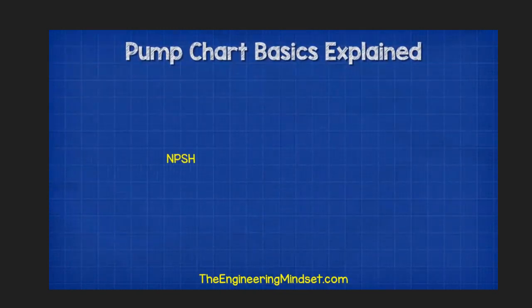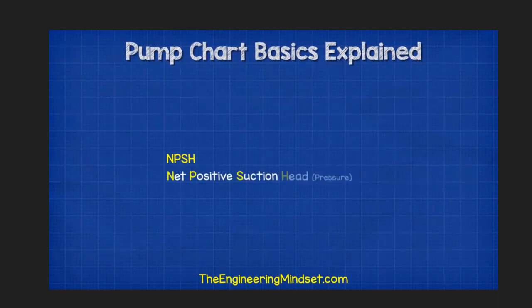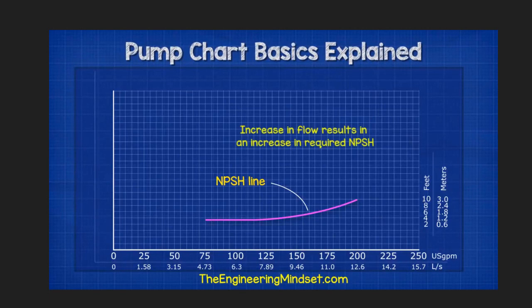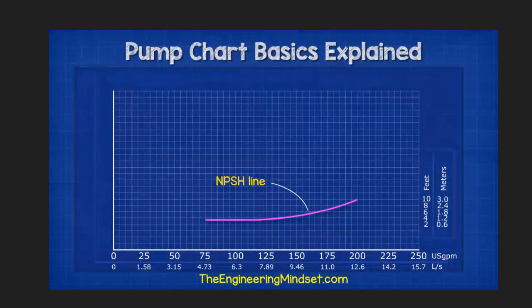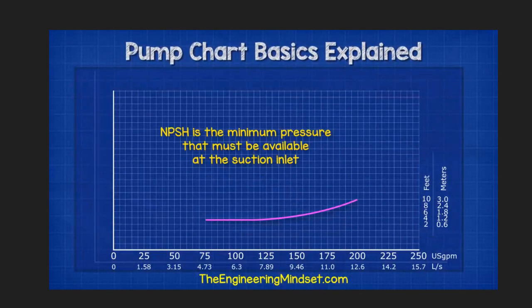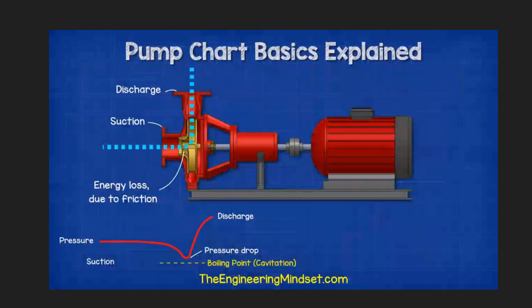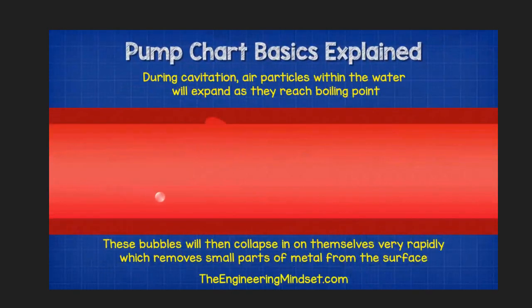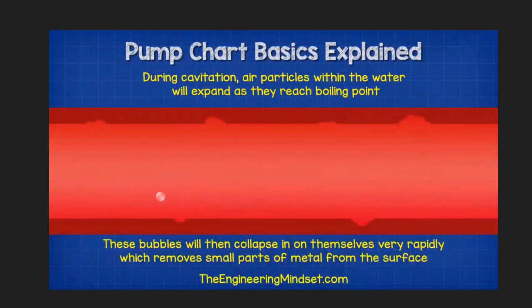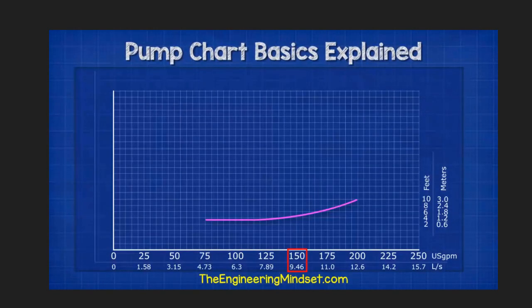NPSH is the required net positive suction head pressure. It usually has an upward curve, meaning as the pump flow rate increases, the NPSH value also increases. We measure this in meters or feet, sometimes kilopascals. The NPSH is the minimum pressure that must be available at the suction inlet of the pump to overcome entrance losses and avoid cavitation. Pump cavitation occurs where the pressure at the inlet reaches a low enough point that the water begins to boil, creating rapidly expanding and collapsing air bubbles which gradually destroy the surface of the pump and casing. For example, to move 150 gallons per minute we would require an NPSH value of around 4.9 feet.